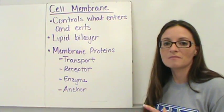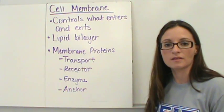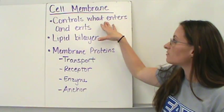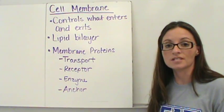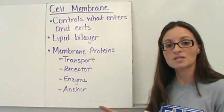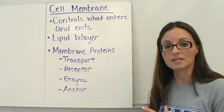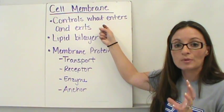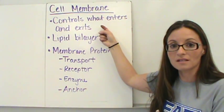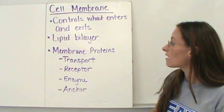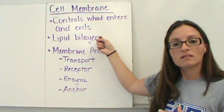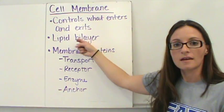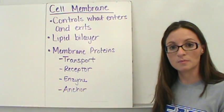The cell membrane has a much more in-depth structure — there are multiple parts to it. It's going to control what enters and exits the cell, keeping certain things out and allowing other things in. It takes, controls, and protects that cell from anything that shouldn't be going in. It's what's called a lipid bilayer — two layers — with lipid meaning fat, so it's essentially a waterproof coating.